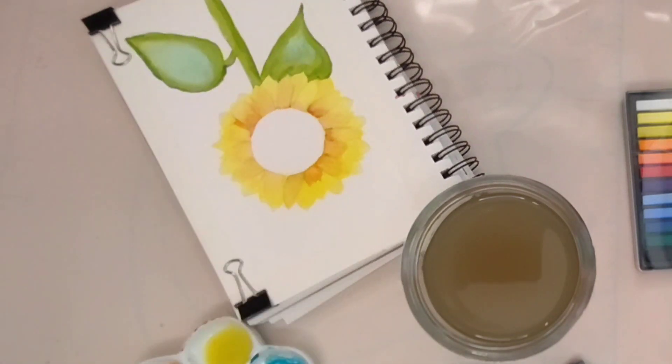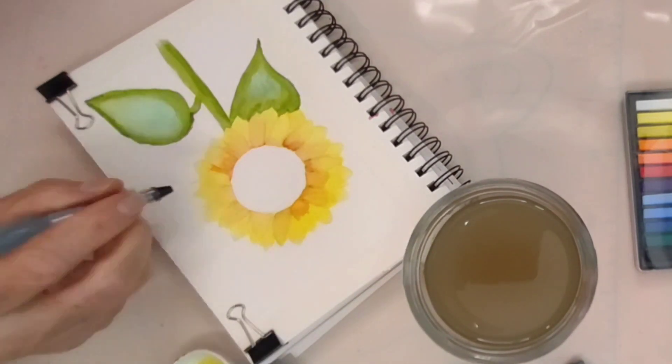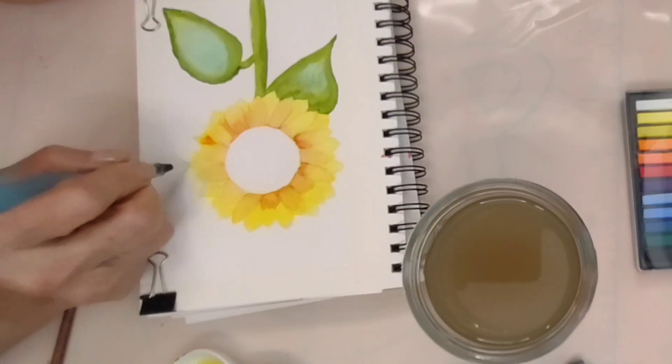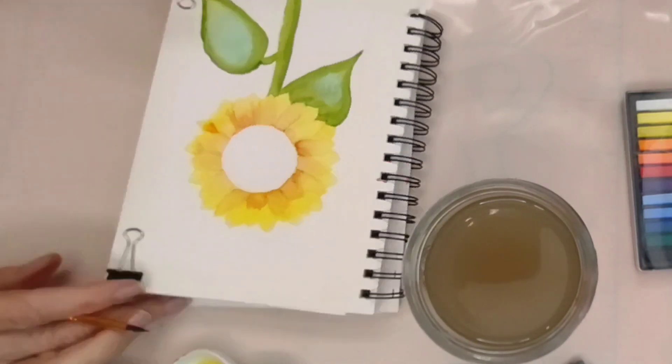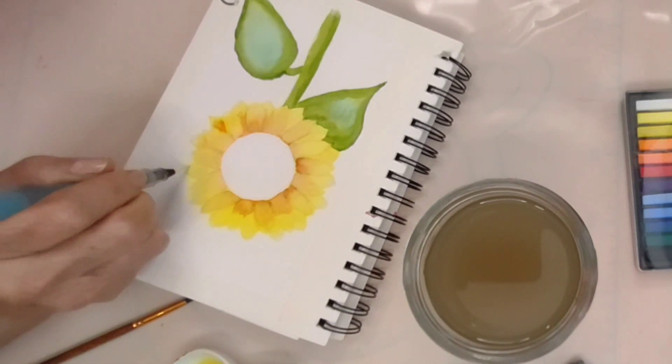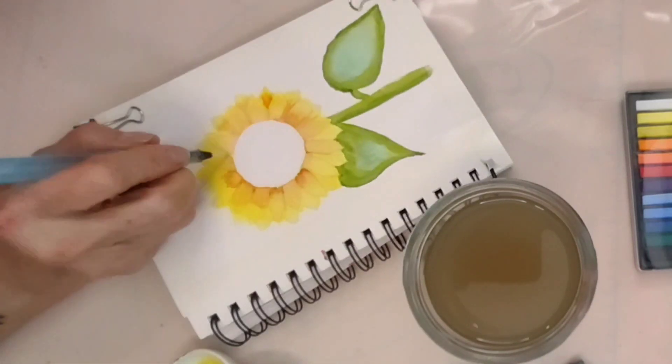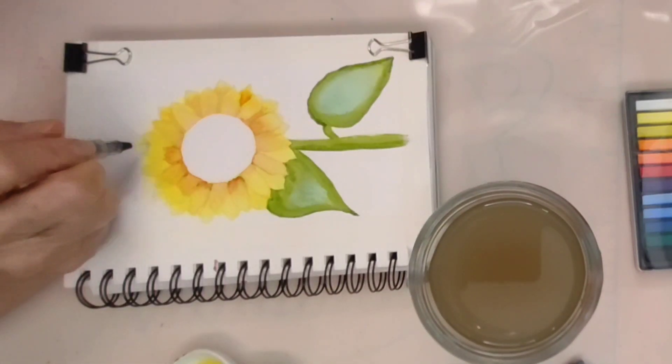Another symbolic meaning associated with sunflowers is their representation of growth and resilience. Sunflowers are known for their ability to grow tall and strong, even in adverse conditions. They can withstand harsh weather, poor soil, and limited resources, making them a powerful symbol of resilience and perseverance.